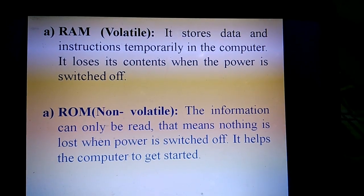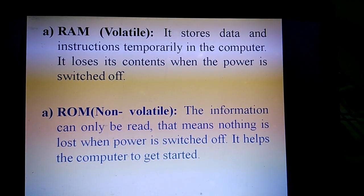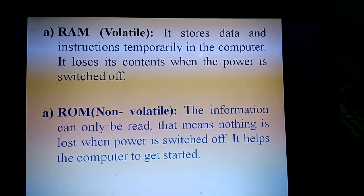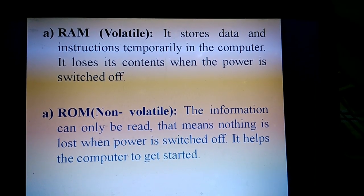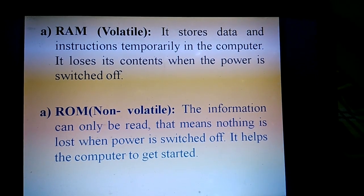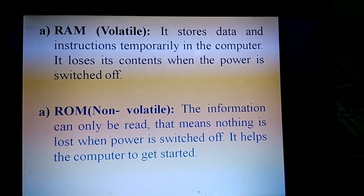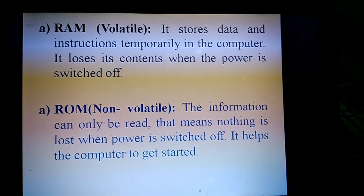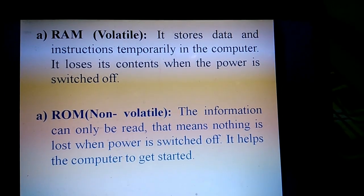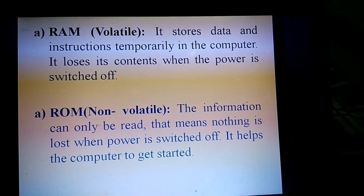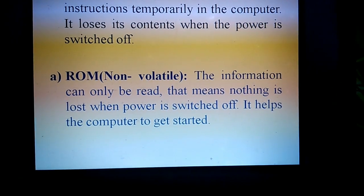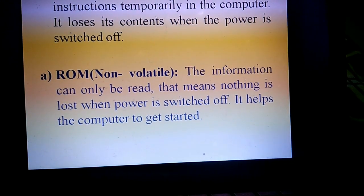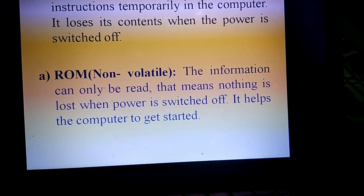RAM is called the primary memory or main memory. It stores data and instructions temporarily in the computer, which means it loses its contents when the power is switched off. We also call it volatile memory.